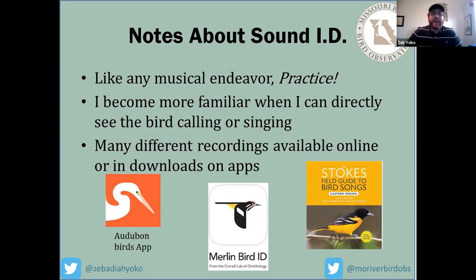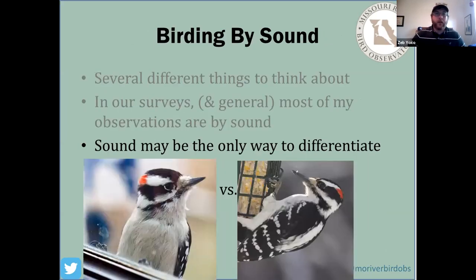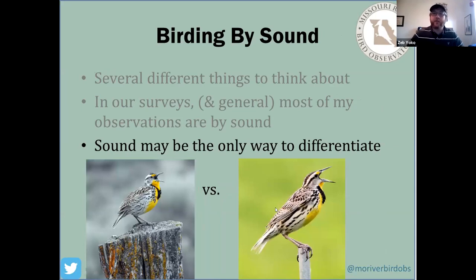If you don't have the opportunity to watch a bird make its call, there are recordings available online in several field apps such as the Audubon app or Merlin Bird ID to confirm an identification. There are also CD or MP3 sets like the Stokes Field Guide with a collection of bird songs and calls for your area. Sound ID is a really powerful tool — in some cases it may be the only way to differentiate species. These two pictures are two separate species with slight differences — you might be able to identify them visually, but sound will be a much better giveaway.